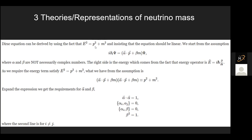If we combine that — alpha p plus beta m, whole squared — and open the brackets and solve it, this is what you get. Alpha i and alpha j are for multiple values of alpha because you get these answers in the form of matrices. So the anti-commutative property is: alpha i times alpha j plus alpha j times alpha i equals zero. The scalar product has to be one because of the coefficient of p squared, and beta squared has to be one because of the coefficient of m squared.